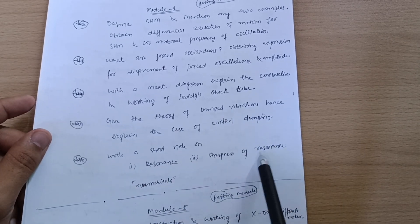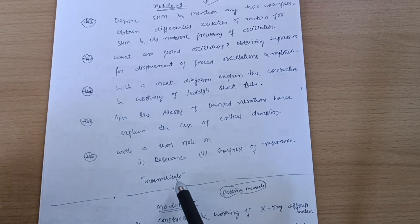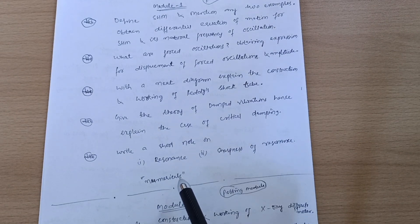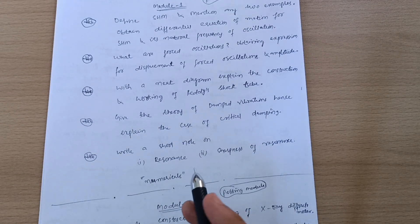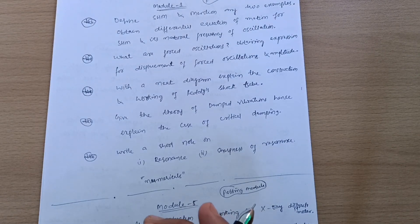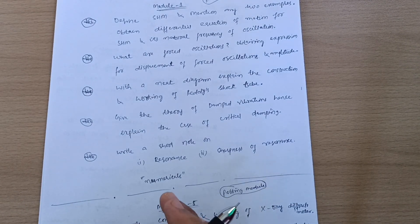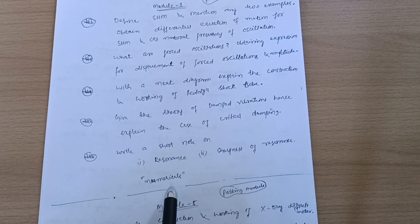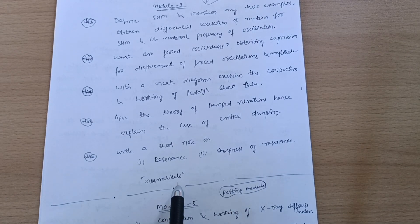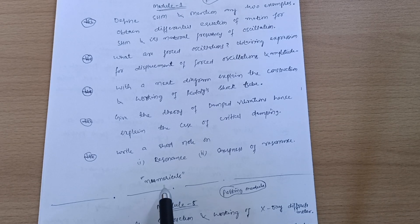Write a short note on resonance, sharpness of resonance, and go through numericals. My dear friends, numericals are very simple ones. I don't think they are tough numericals. Only thing is you should remember the formulas. Rest of the thing is just putting the values and getting the answers. I have already uploaded a lot of numericals for physics subject. I will share the link in the description box for the numerical part.